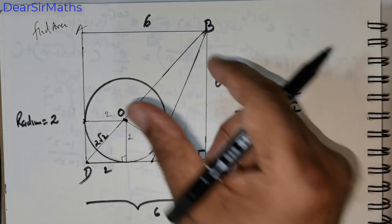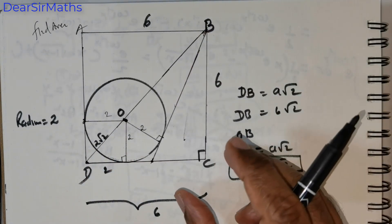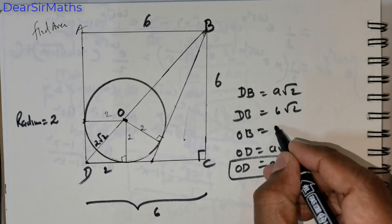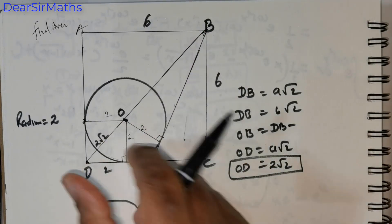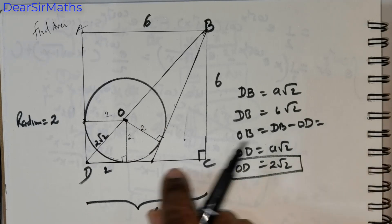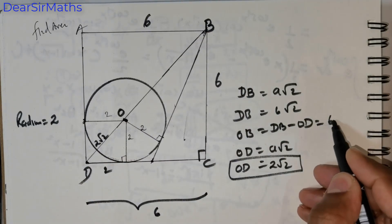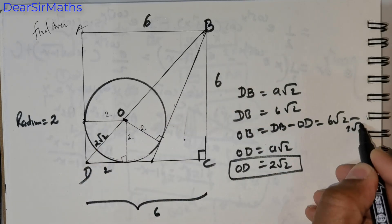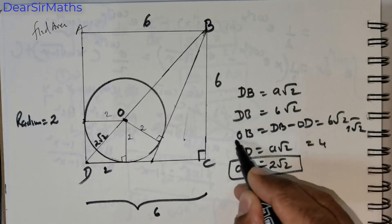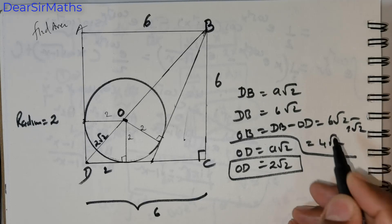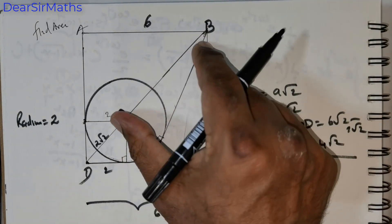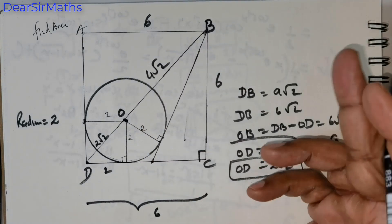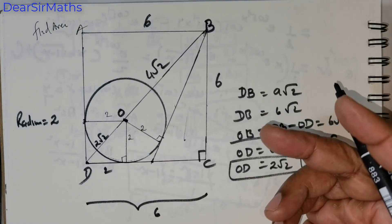Now I'm interested in obtaining OB. How do you get OB? OB is nothing but DB minus OD. What is DB? DB is 6√2. And what is OD? OD is 2√2. So what do you get? You get 4√2. So this distance is actually 4√2.